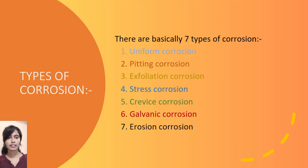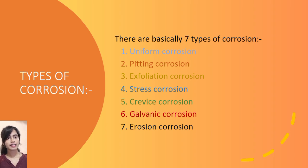There are basically seven types of corrosion. First is uniform corrosion. Second, pitting corrosion. Third, exfoliation corrosion. Fourth, stress corrosion. Fifth, crevice corrosion. Sixth, galvanic corrosion. And seventh is erosion corrosion. Let us discuss them one by one.